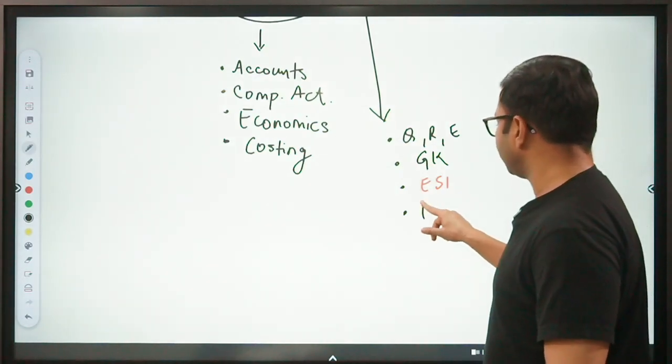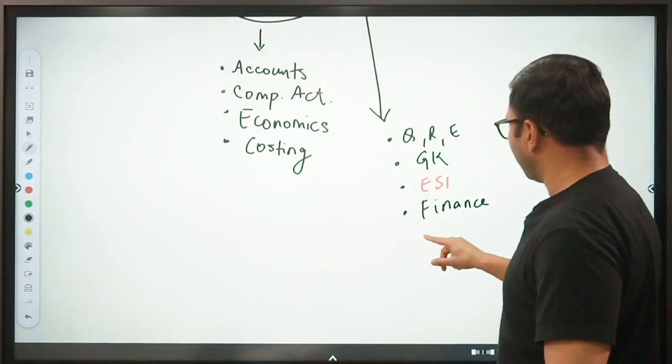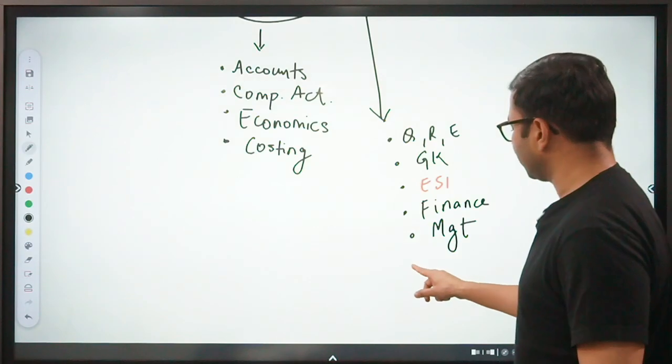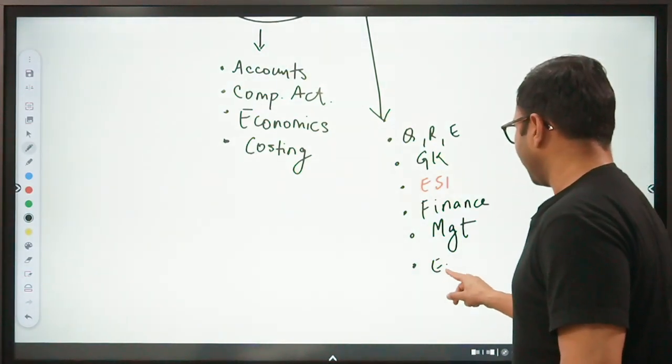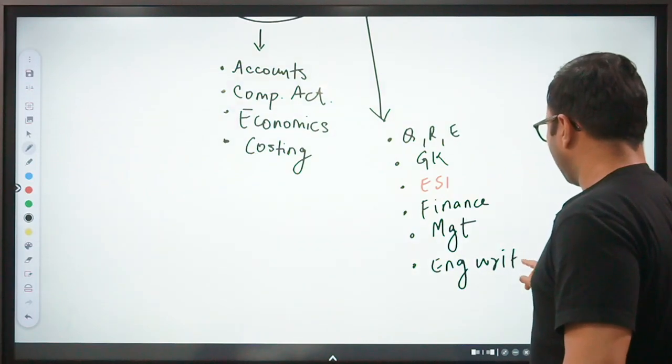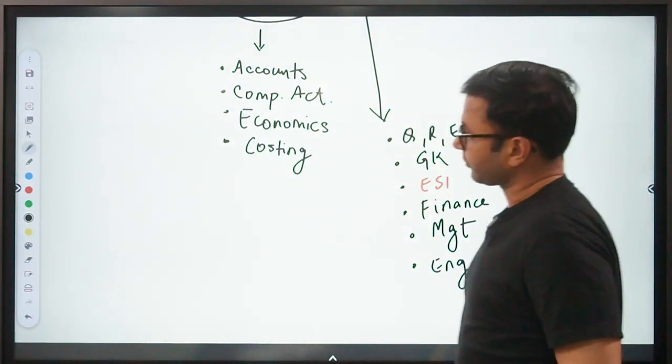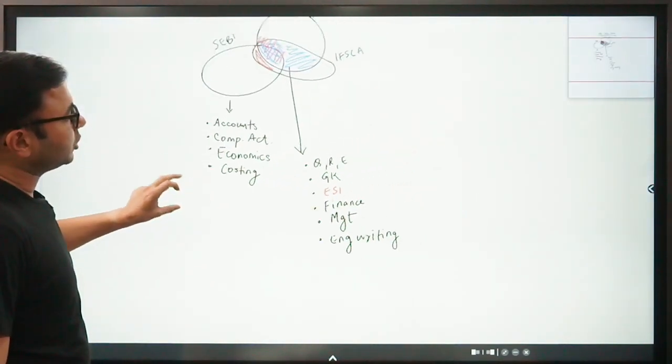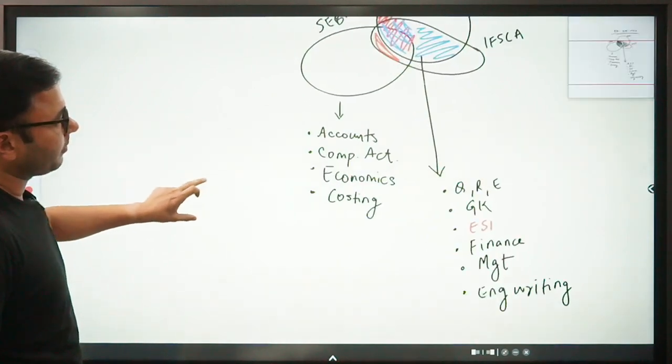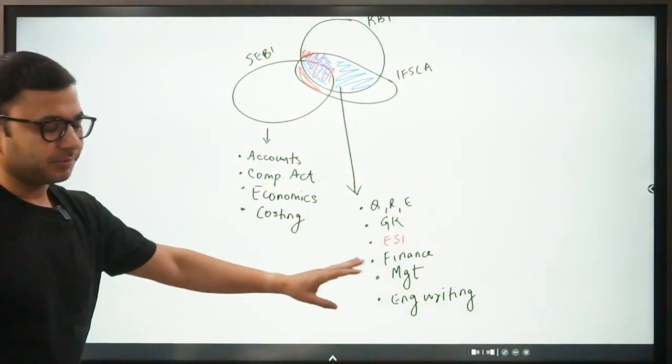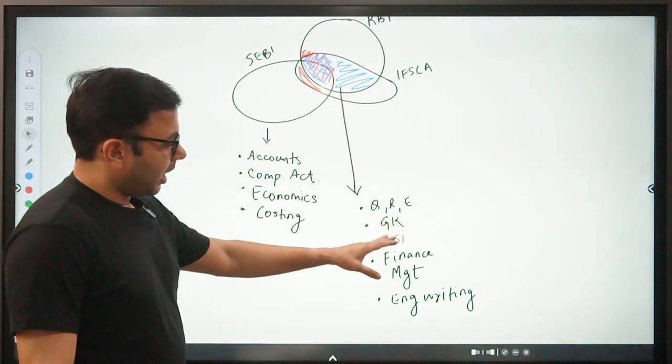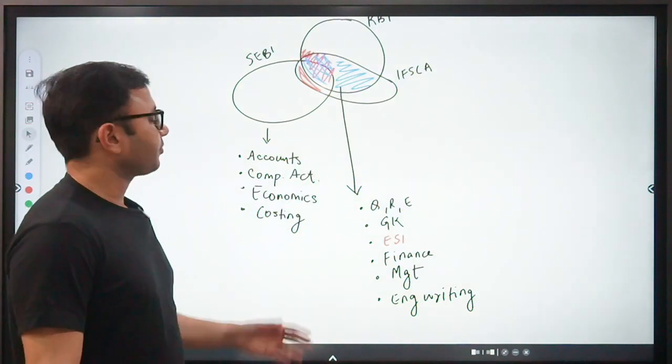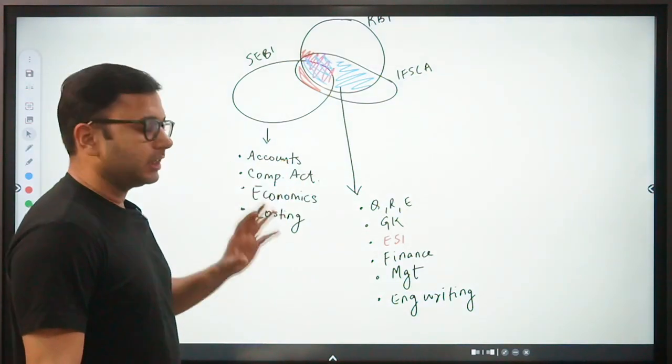Then we have Finance, common in both RBI and SEBI. Similarly, we have Management, common in both RBI and SEBI. We have English Writing, common in both RBI and SEBI. So you can see that whatever you are covering for RBI, majority of that is useful for SEBI also. If you are covering these subjects for RBI, other than ESI, everything that you read for RBI is as relevant for SEBI as it is for RBI. Additionally, you have to read these four subjects for SEBI.